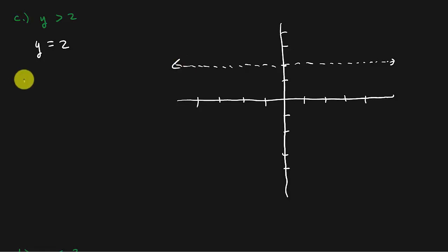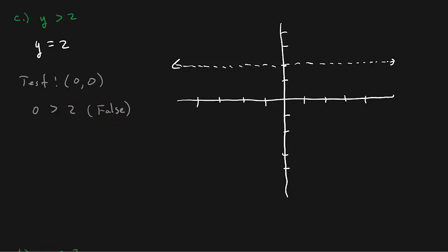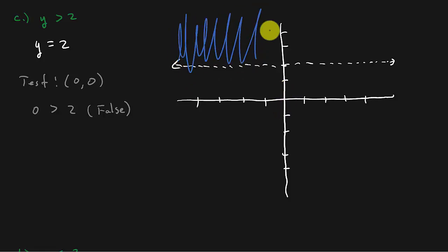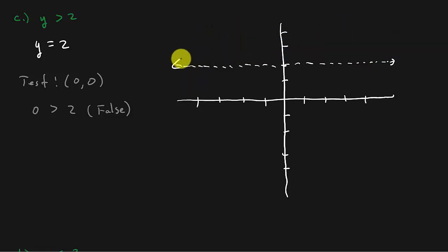Now we want to find a test point. We can choose (0, 0). Plugging in: there's no x value here, so just plug the y value in — 0 is greater than 2. That is a false statement. I chose a point below the line and got false, so I shade on the other side — the region above the line.